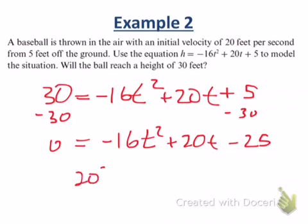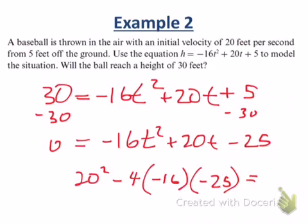All right, so I will do 20² - 4(a)(c). That's 400 minus 1,600. I've got three negatives. Negative times negative times negative is negative. So that's -1,200, which means what? No real solutions, which means the ball will not reach a height of 30 feet.